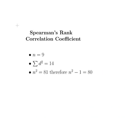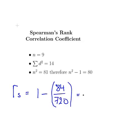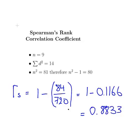Now we can finish the calculation. R_S equals 1 minus 84 divided by 720, which equals 1 minus 0.1167, giving us 0.8833. Expressed to two decimal places, R_S equals 0.88. And that ends our presentation.